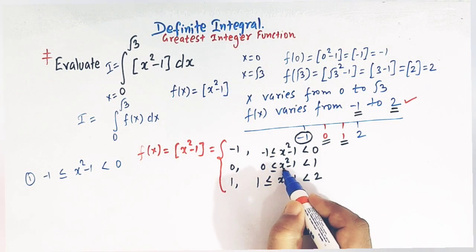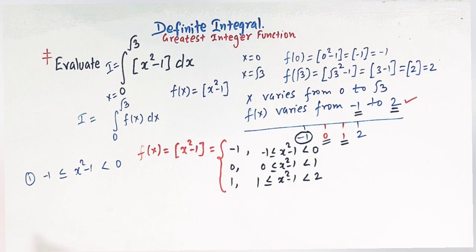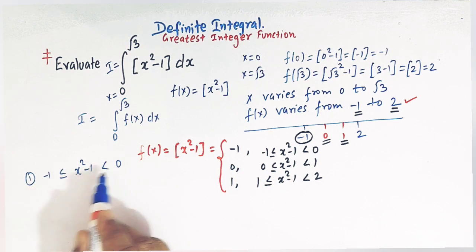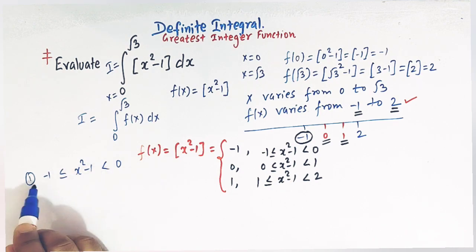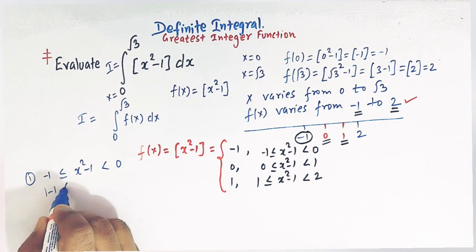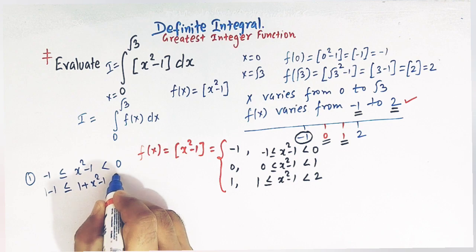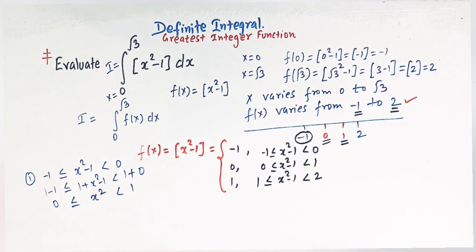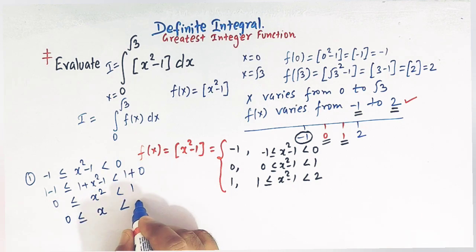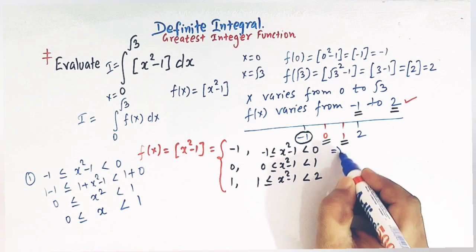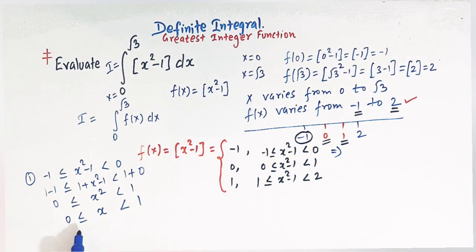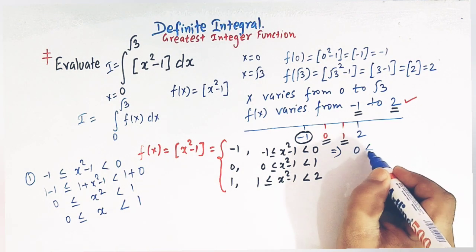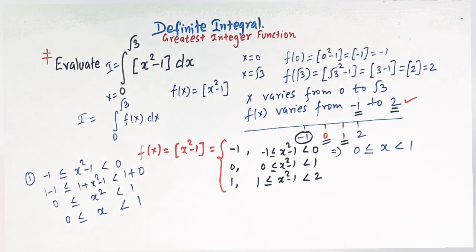Let us solve the three inequalities one by one to get the range for x. For the first inequality: minus 1 ≤ x² − 1 < 0. Adding 1 throughout gives 0 ≤ x² < 1. Taking the square root gives 0 ≤ x < 1. So the first inequality reduces to x in [0, 1).